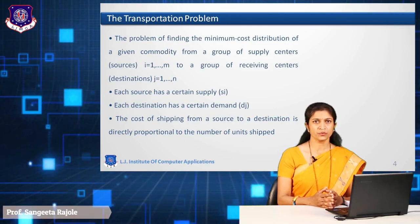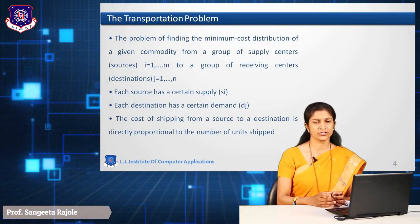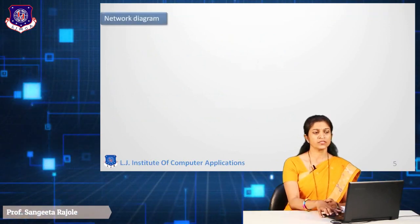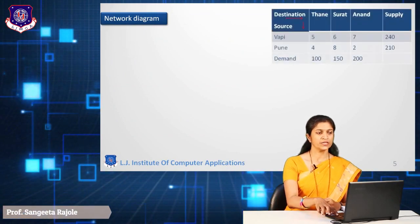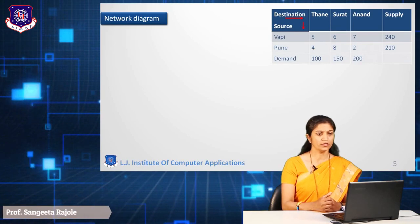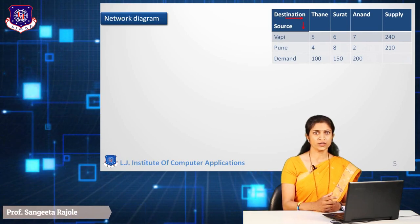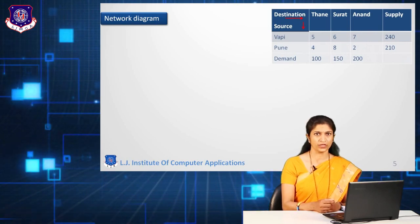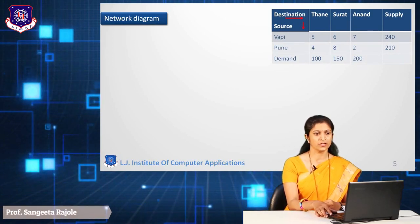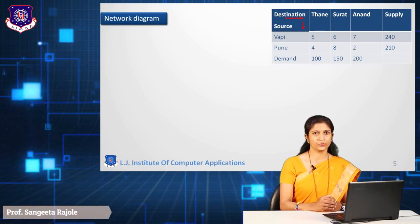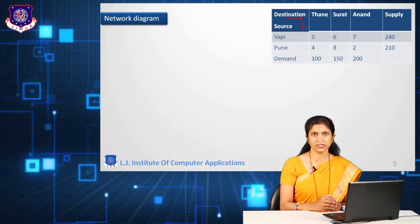The transportation problem is used to minimize the total cost from one source to another destination point. Now we will see a network diagram. We will take one example. In this table, a particular product is going to be manufactured in Wapi and Puni. The destinations to which goods will be transferred are Thane, Surat, and Anand. Source Wapi can manufacture and supply only 240 products. As per this particular table, Puni can supply only 210 products.